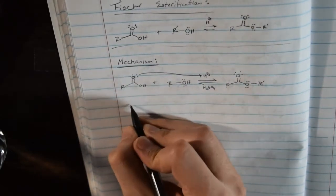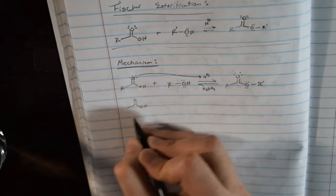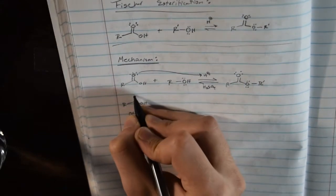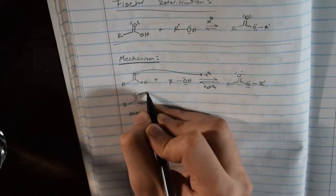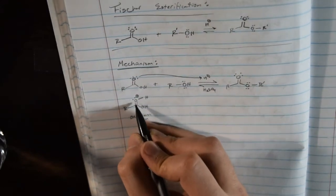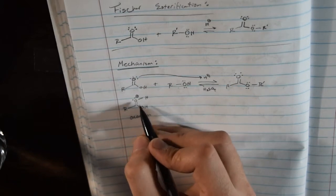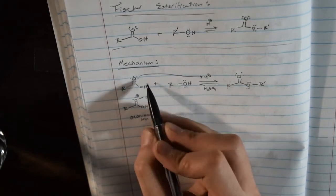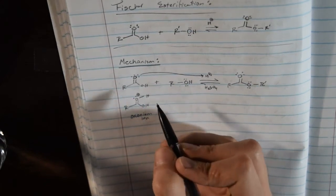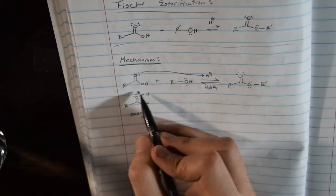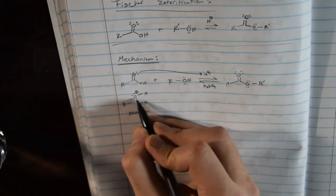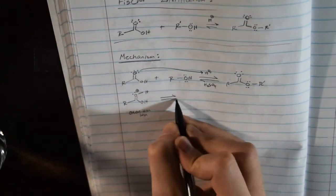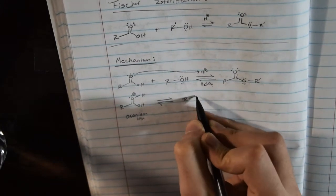The first thing that happens is this oxygen on the carboxylic acid gets protonated to make an oxonium ion. Like that — and it has a positive charge. This ion is fairly stable. Even though it's an oxygen with a positive charge, it's stable because oxygen is an element that resonates a lot. So if you see something odd that's stable, the answer is usually resonance. After it's protonated, it can resonate and form another structure.